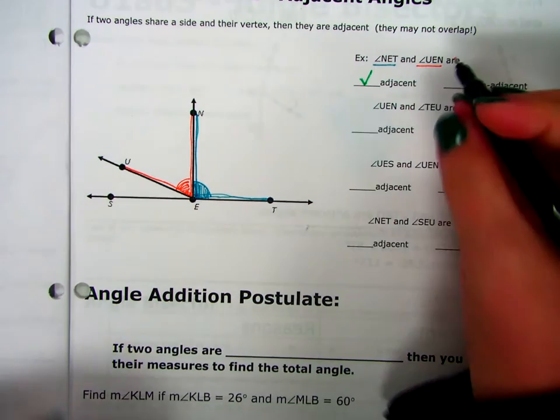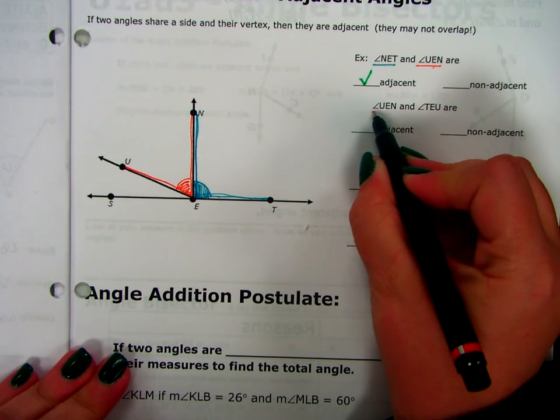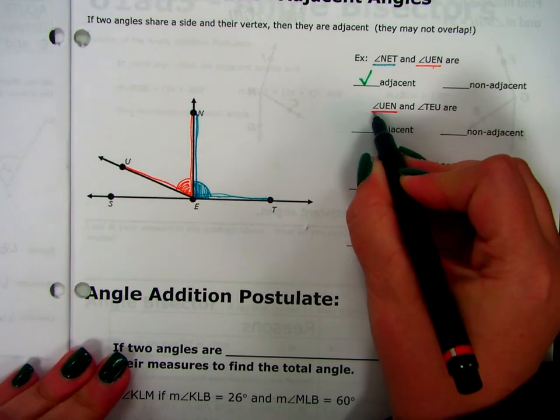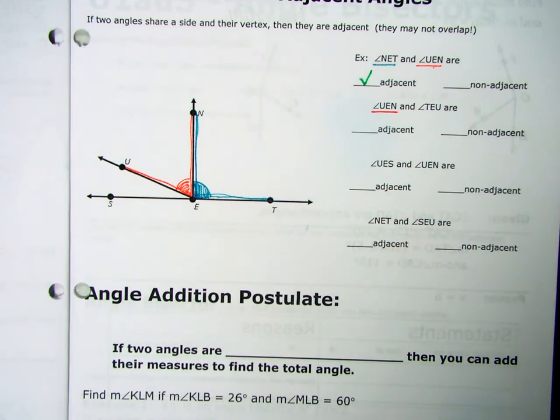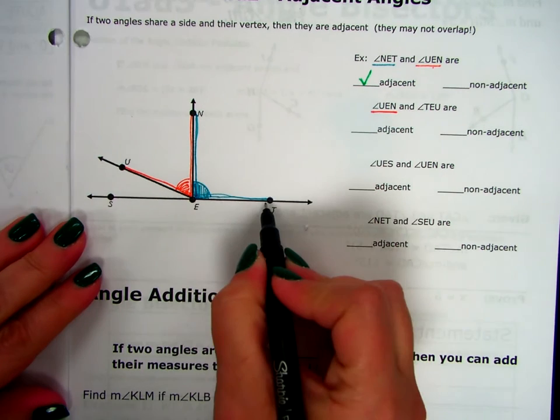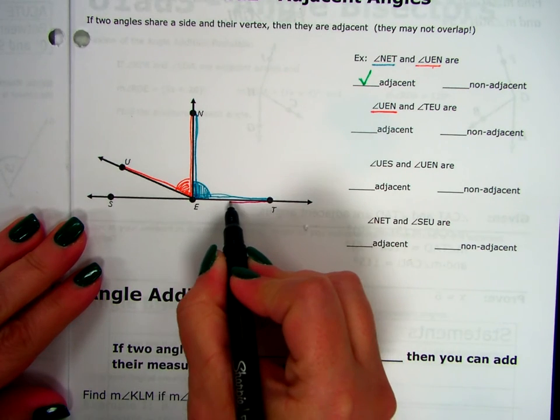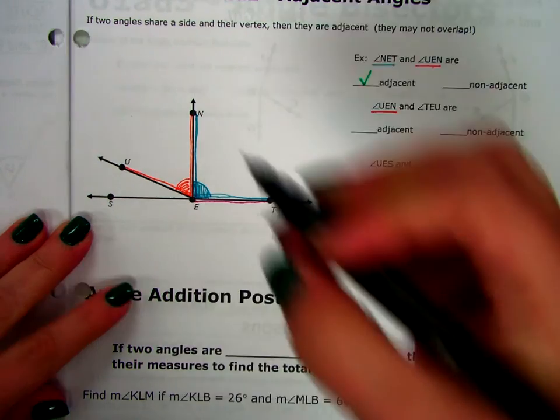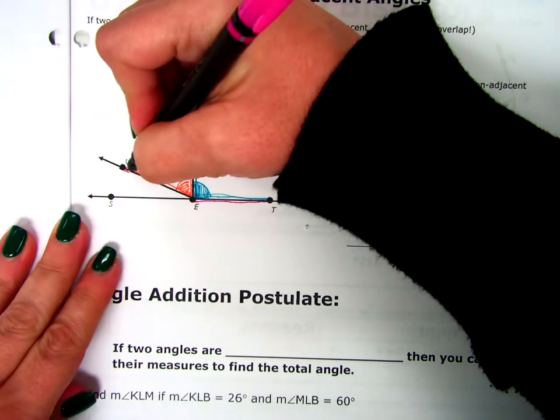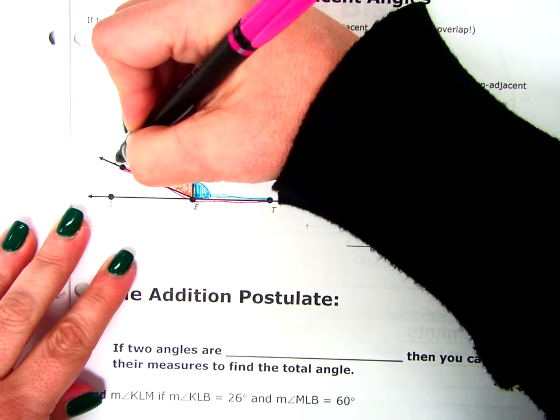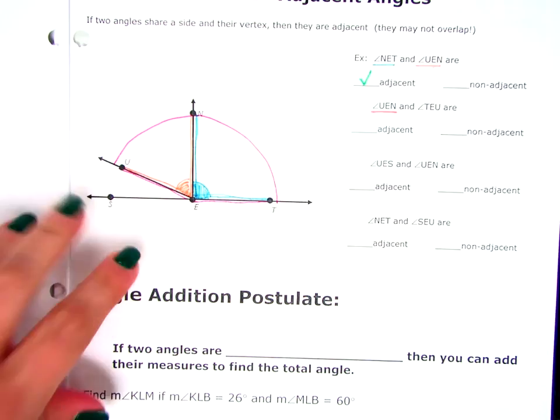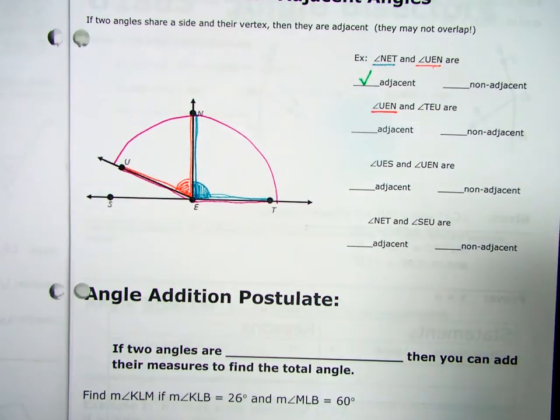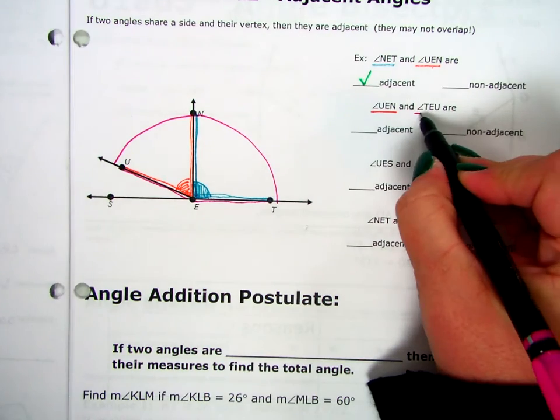So UEN, this orange angle here. Would you say those angles are next to each other? Yes. They share this vertex. They share Ray EW and they're not overlapping each other. They're just right next to each other. So this one is, yes, they are adjacent. The next one, UEN, which I've already marked, right? That's the same angle as this one up here, UEN. And TEU. So TEU starts here at T, goes to E, and then goes way out to U. So TEU is this whole angle here.